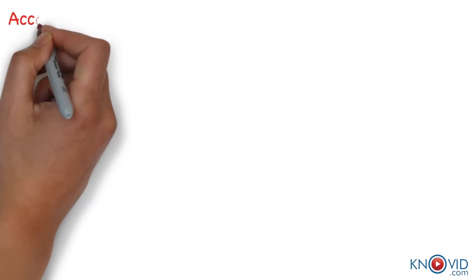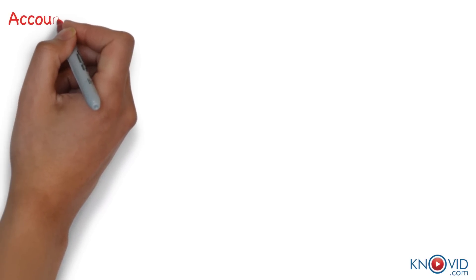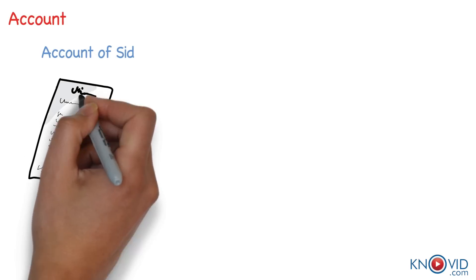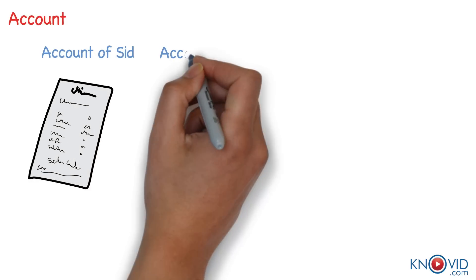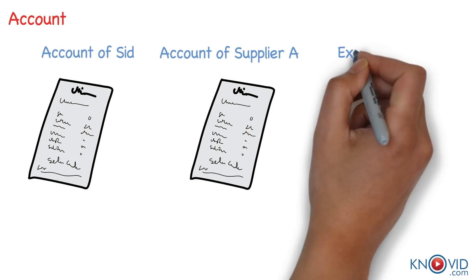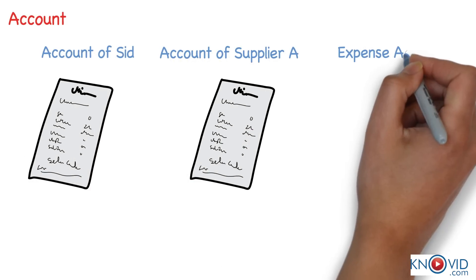As we saw, every transaction has two aspects. Similarly, each aspect has an account. An account is a summary of relevant transactions at one place relating to a particular head.